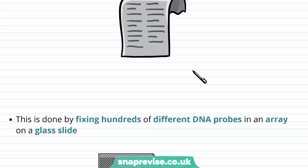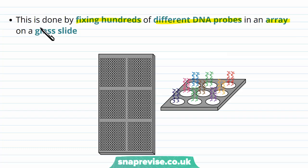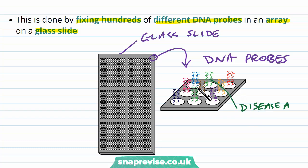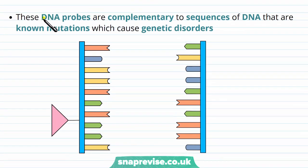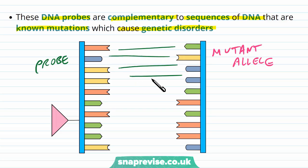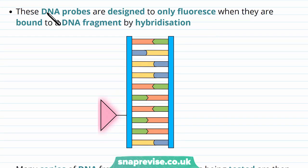Individuals can be screened for many different genetic diseases simultaneously by fixing hundreds of different DNA probes in an array on a glass slide. Each position on the slide holds a specific DNA probe looking for a different disease — for example, one probe for disease A, another for disease B. Each probe is complementary to a specific mutant allele sequence known to cause a particular genetic disorder.